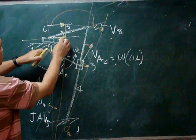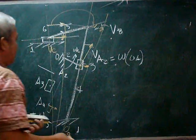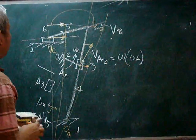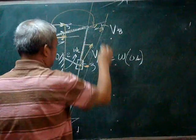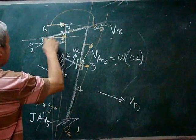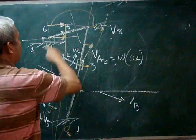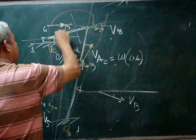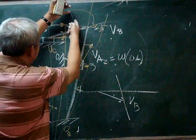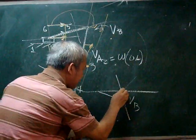Using the relative velocity method on this part of the mechanism, we transfer this velocity to B. The velocity of C is along the horizontal, and the relative velocity of C with respect to B must be perpendicular to BC. We make this parallel line, and we have an interception here.